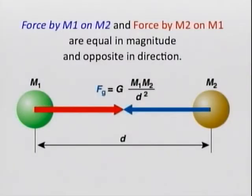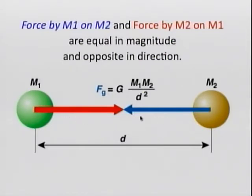They have the same size, because the product of the masses is the same and the distance between the masses is the same — it's the same force. The only thing that's different is that they are in opposite directions. If you go back to the figure, M2 is pulling on M1 to the right with the intensity shown in red, and M1 is pulling on M2 with the blue force to the left. So they are the same size — equal magnitude, opposite direction. This is a clear, typical action-reaction pair.